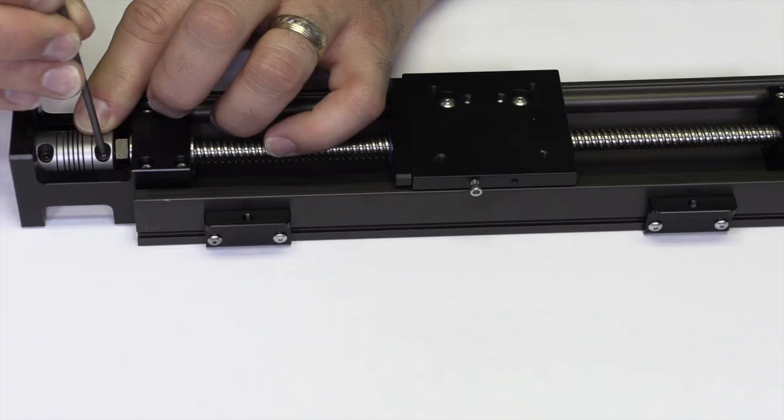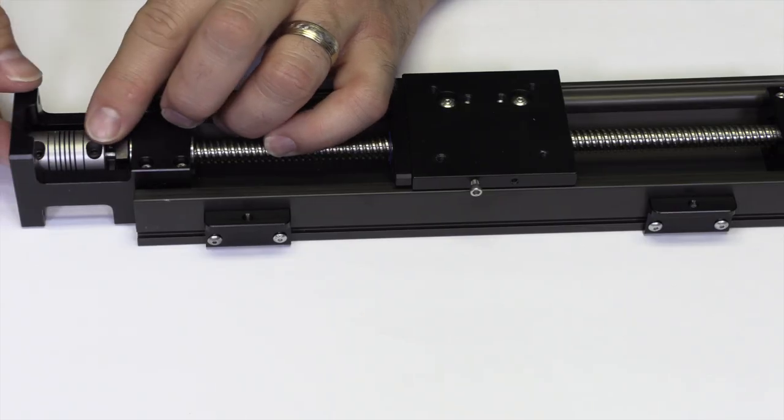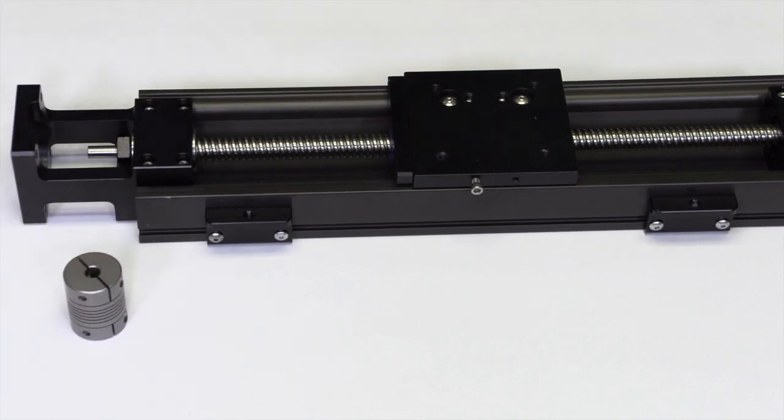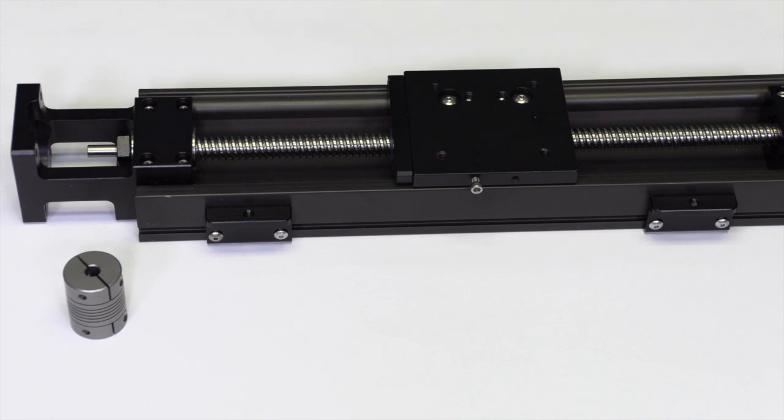First, using a 2.5mm Allen wrench, loosen the shaft coupler on the linear slide side, not the motor side. Remove the 4 motor screws and remove the motor and coupler. The motor had already been removed from our slide, so we are only removing the coupler.